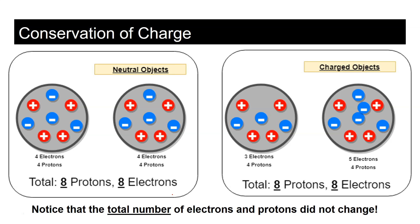Another example: two objects each with four electrons and four protons — both neutral. After rubbing, one has a net charge of plus one and the other negative one. But there are still eight electrons and eight protons in total. That's the conservation of charge.